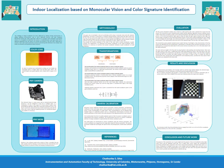Indoor Localization based on Monocular Vision and Color Signature Identification. Indoor localization is locating people or objects where GPS and other satellite technologies lack precision or fail entirely, such as inside buildings and underground locations. Designing an image-based positioning system is rather complex due to heavy computational processing.